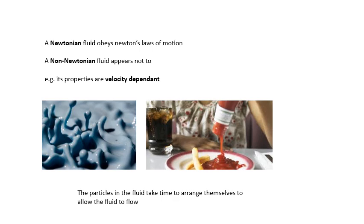Its properties are velocity dependent. Another example is ketchup. If you want your ketchup to come out of the bottle, you give the bottle a good whack. Why does this happen? I doubt you'll be asked to explain why, but it's because the particles in the fluid take a bit of time to arrange themselves so that the fluid can flow. Another name for it is a thixotropic material. Its properties are velocity dependent; it is non-Newtonian.